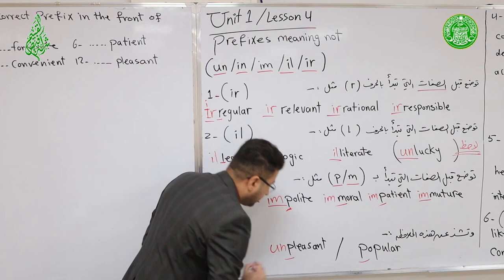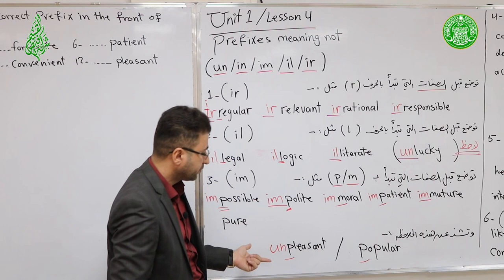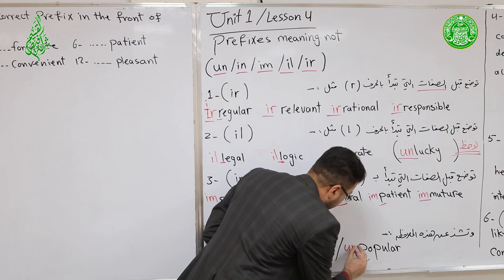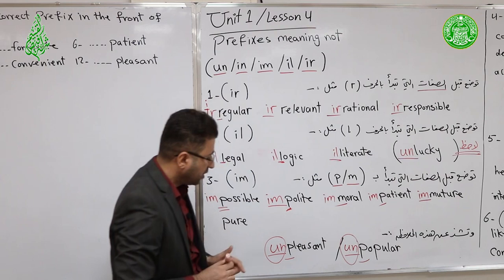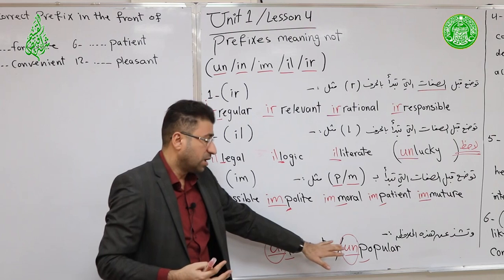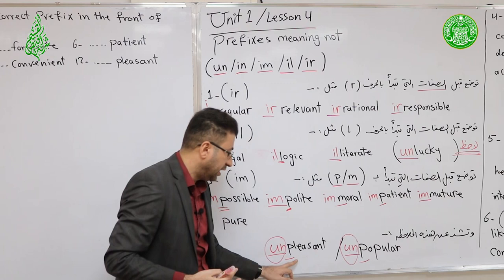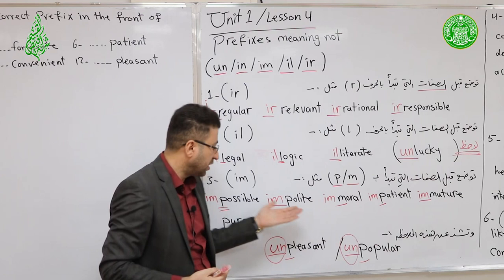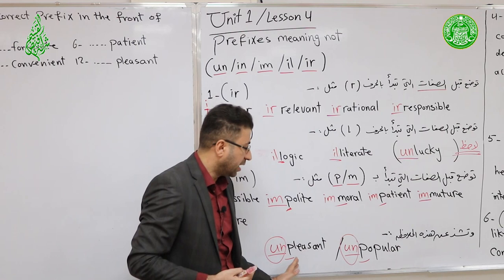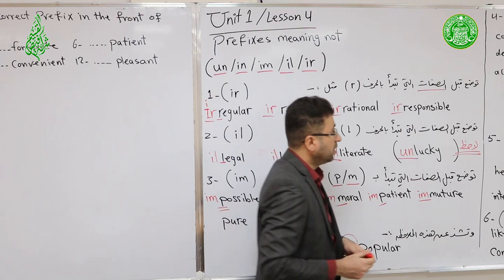For Pleasant, we say Unpleasant; for Popular, we say Unpopular. This is very important — it often appears in the ministerial exam in the spelling section. Both start with P, but we add UN, not IM.